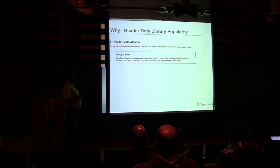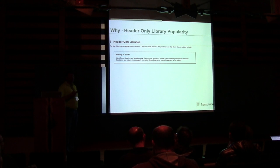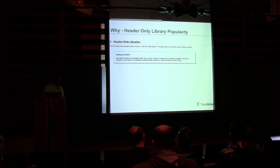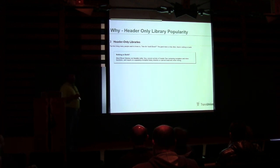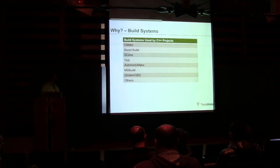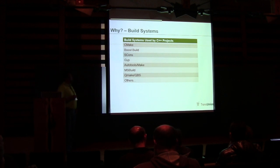Header-only libraries are popular. If you remember from the library-in-a-week discussion, one of the design goals was whether it would be a header-only library. In the Boost documentation they say, hey, we have a bunch of header-only libraries, you don't have to build them. And why is that? Build systems. There's CMake, Boost Build, SCons, Generate Your Project, Auto Tools Make, MS Make, MS Build, QMake, QBS.